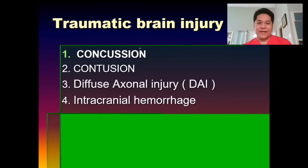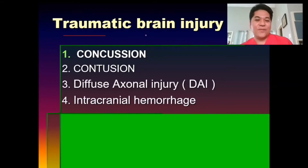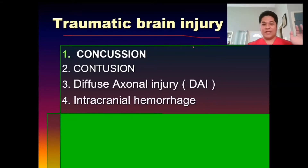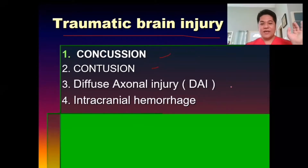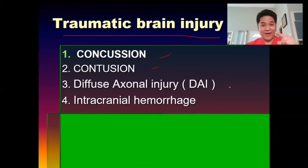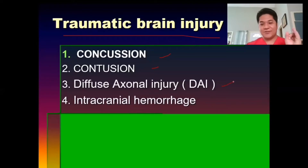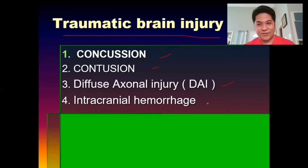Let's start with TBI, or traumatic brain injury. It includes your concussion, contusion, DAI (diffuse axonal injury), and the intracranial hemorrhages.